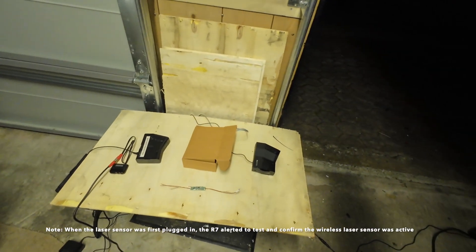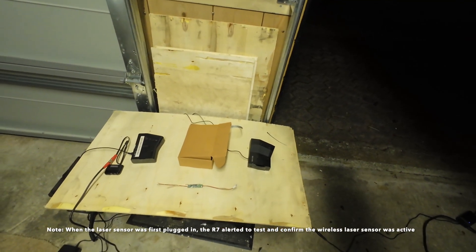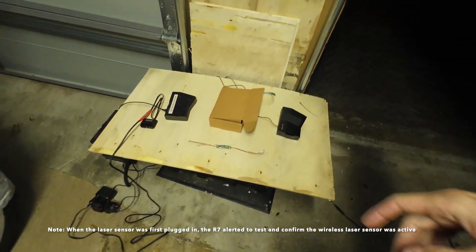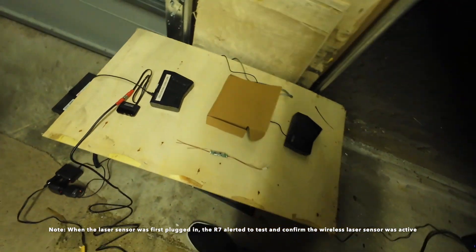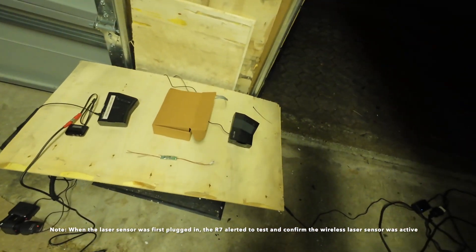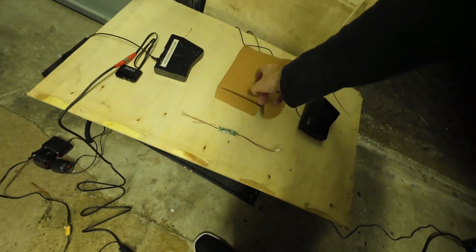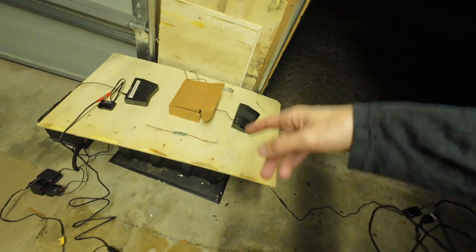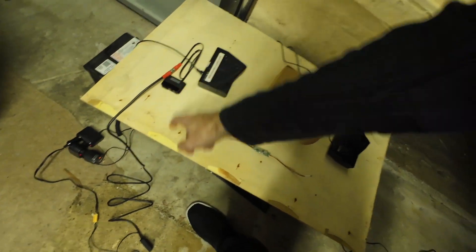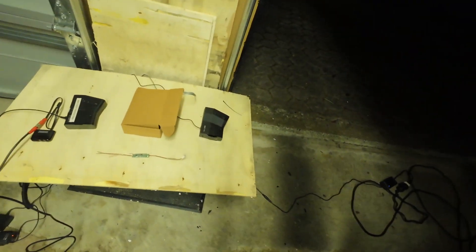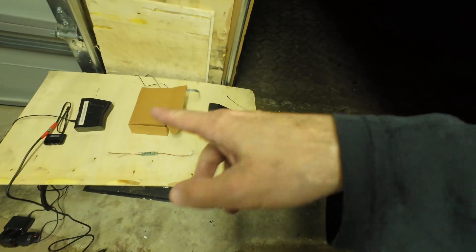So even when I point the laser gun out the door, nowhere near pointing directly at them, this can detect the laser beam outside the laser beam, and then wirelessly transmit that. So even though that's in the box, not seeing the laser beam at all, it's getting the alert from this wireless hardware that it's got inside, which the others don't have.